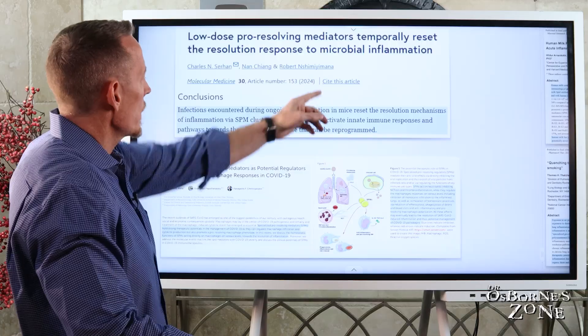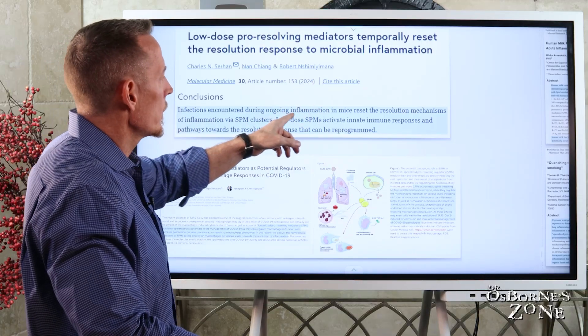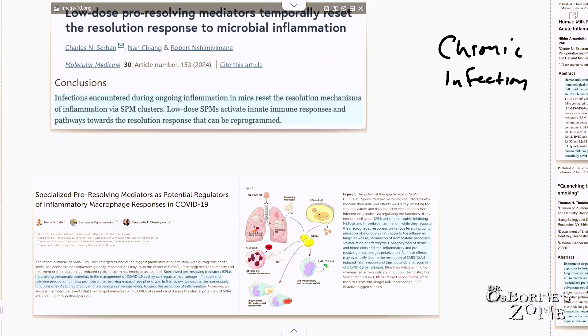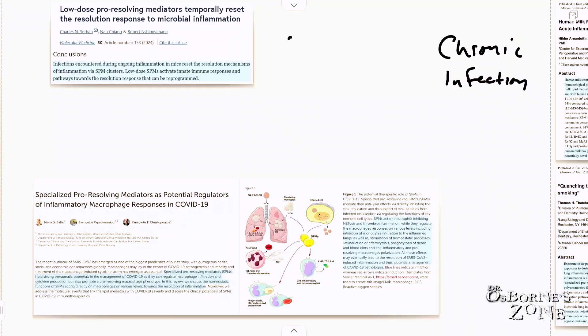Their conclusion was infections encountered during ongoing inflammation in mice reset the resolution mechanisms of inflammation via SPM clusters. Low-dose SPMs activate innate immune responses and pathways toward the resolution response that can be reprogrammed. Generally we can classify infection into two categories, chronic and acute.